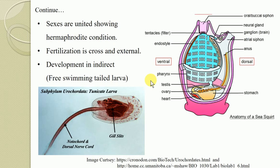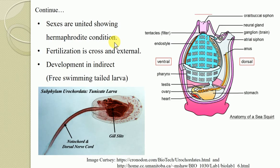Sexes are united, showing the hermaphrodite condition. Both testis and ovary — male and female reproductive parts — occur in the same individual. This hermaphrodite condition is usually found among organisms belonging to Urochordata.